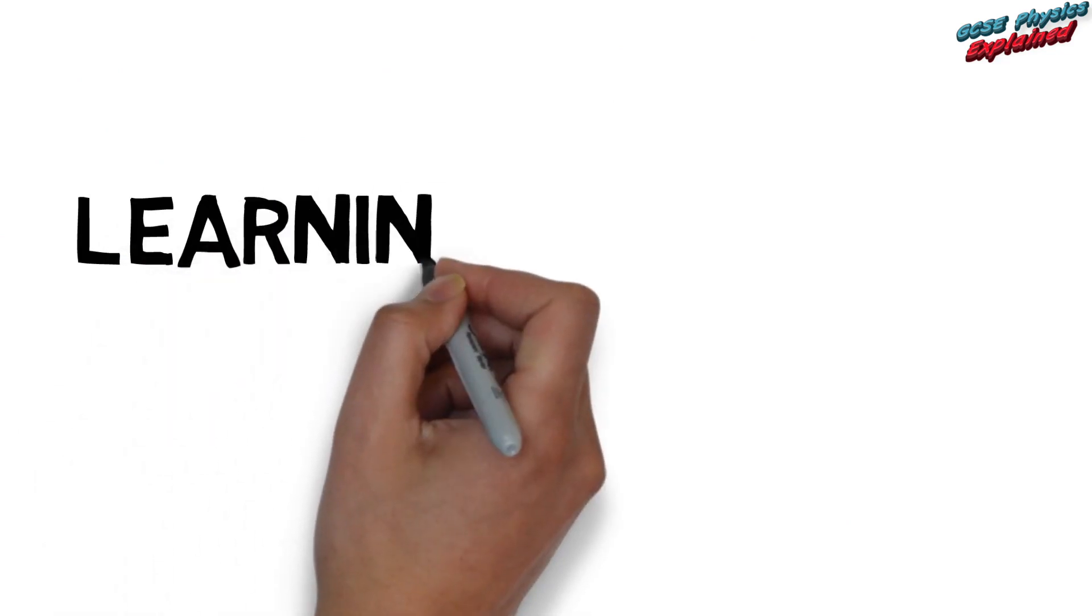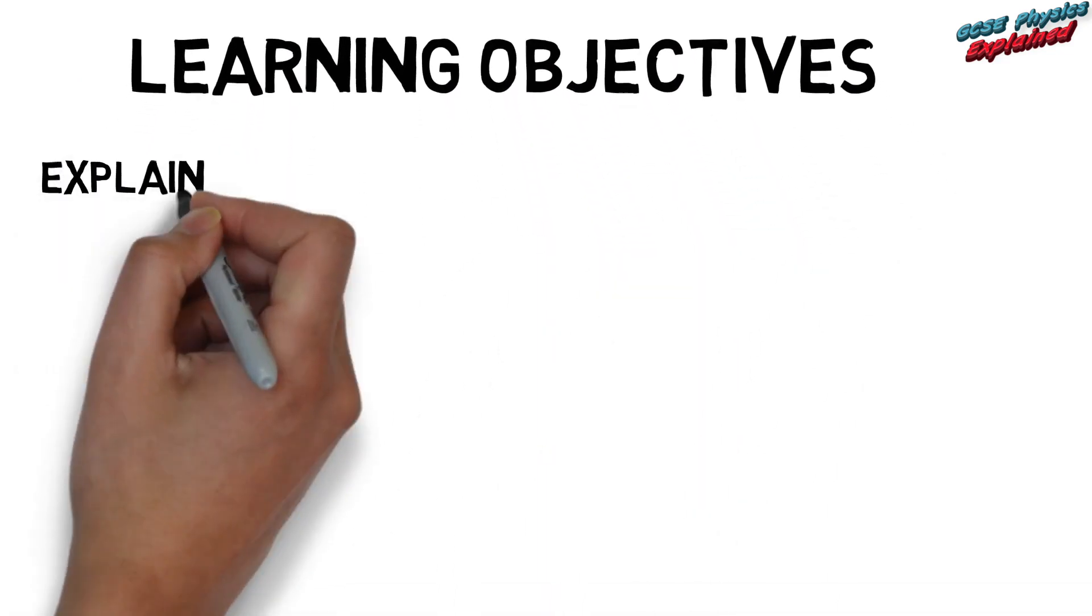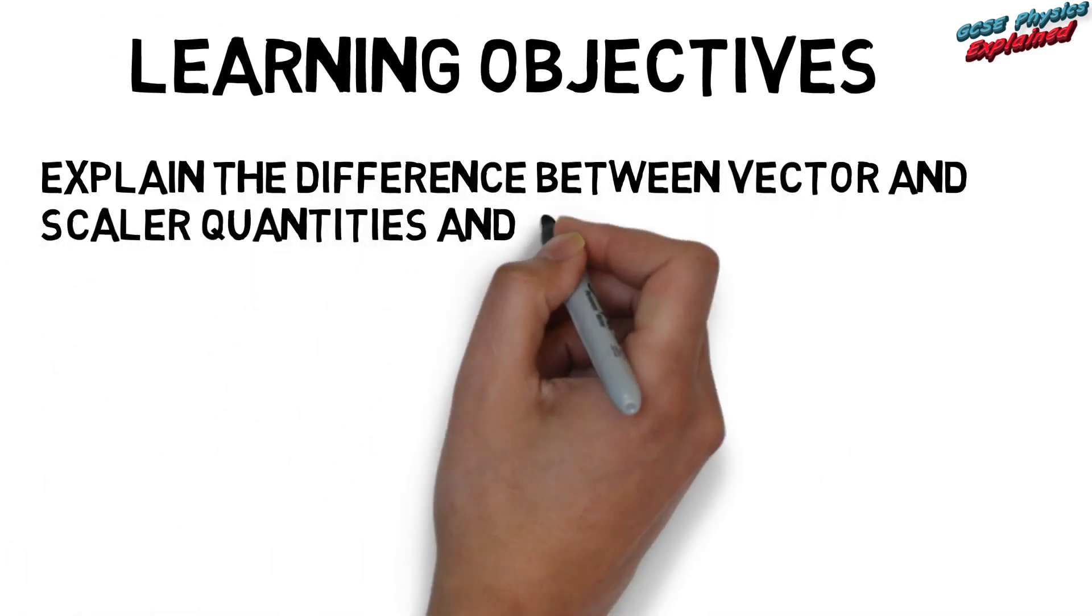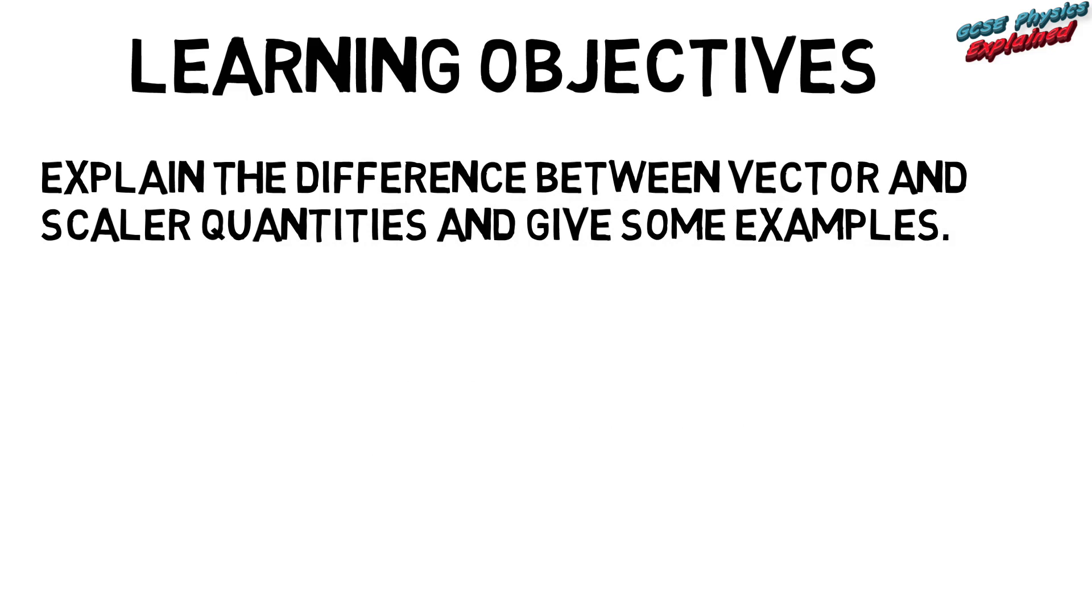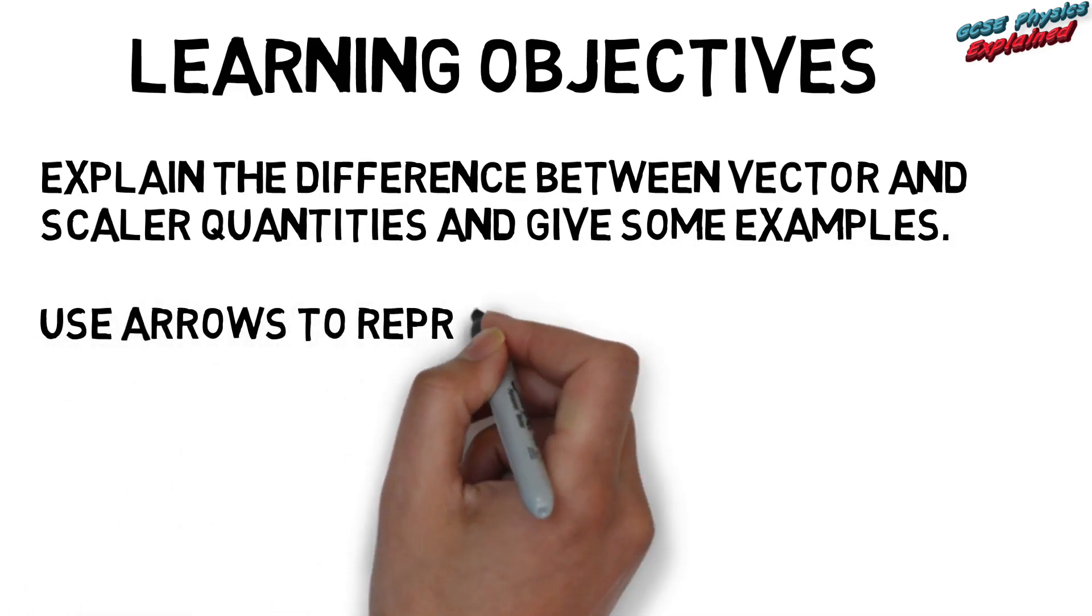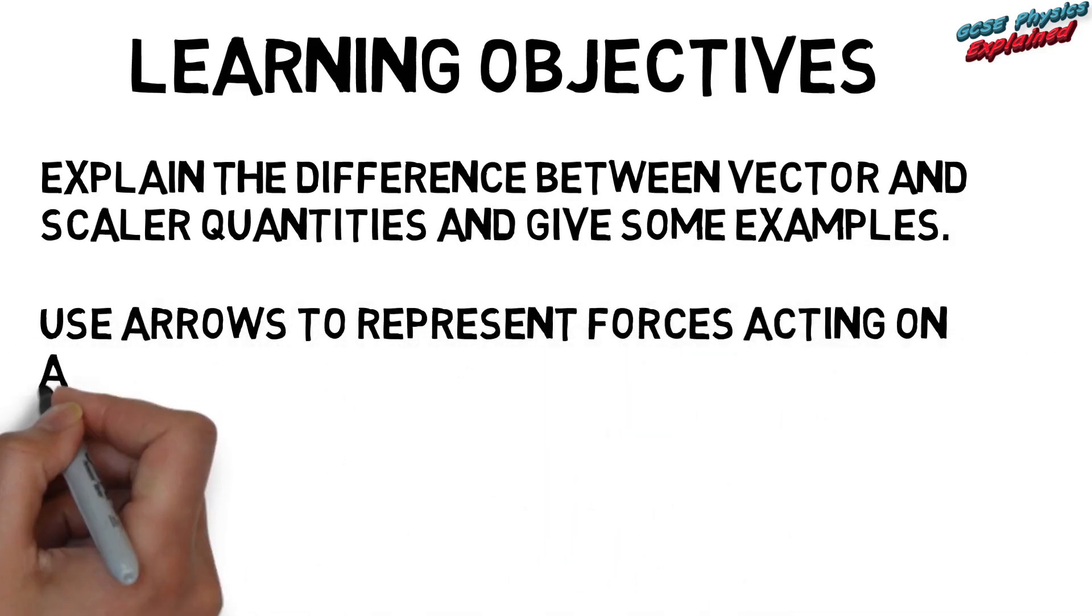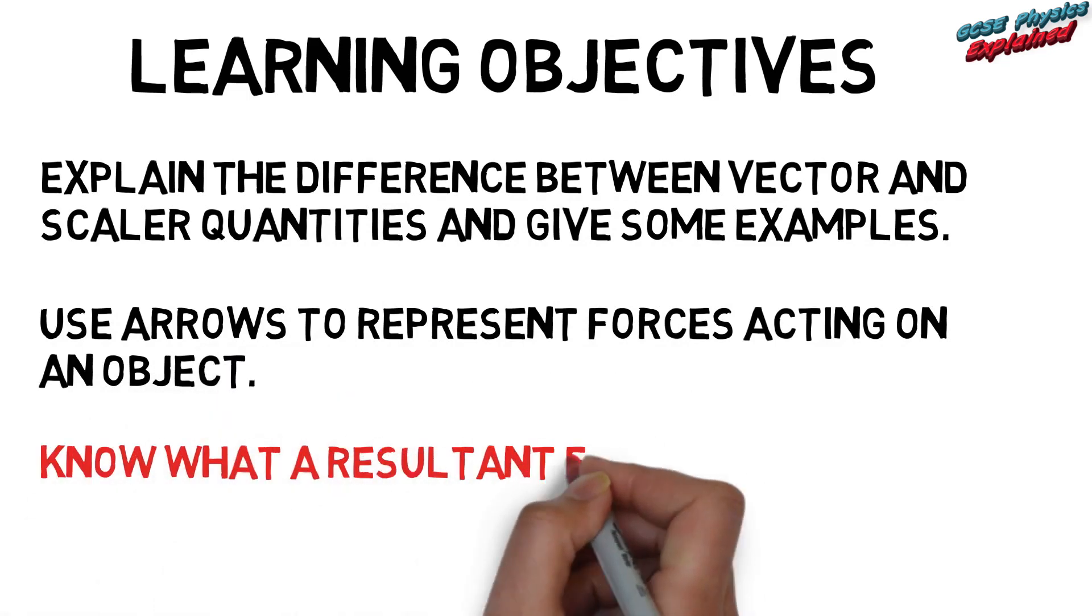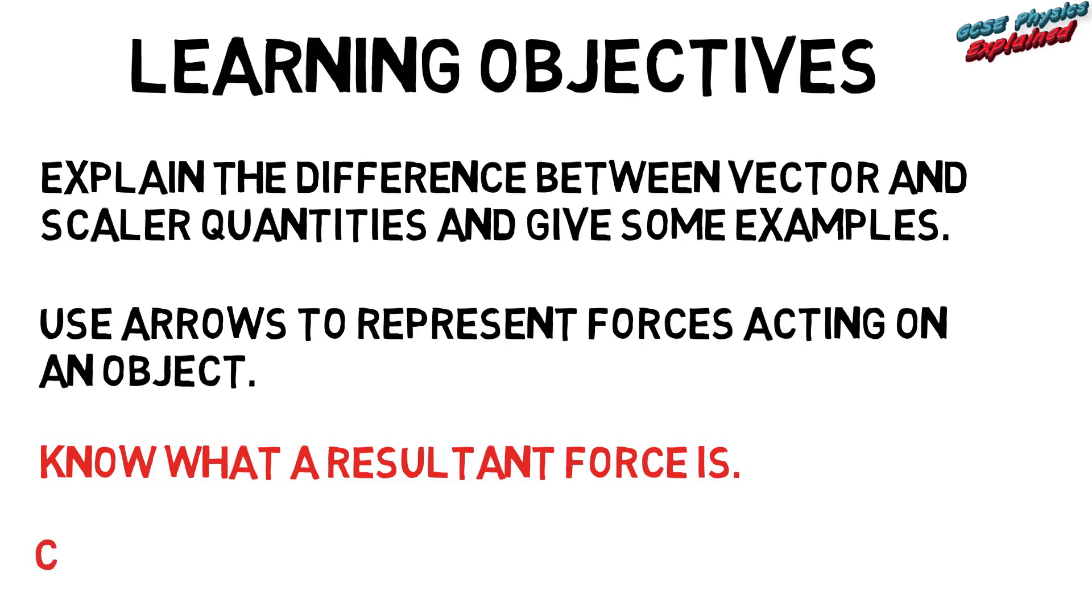Learning objectives: You should now be able to explain the difference between vector and scalar quantities and give some examples, use arrows to represent forces acting on an object, know what a resultant force is, and calculate the resultant force on an object.